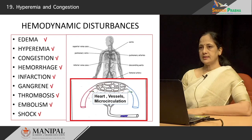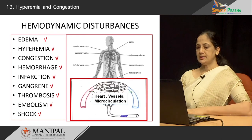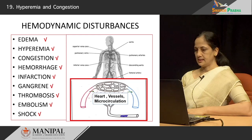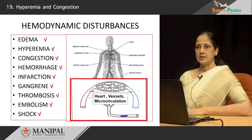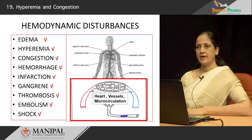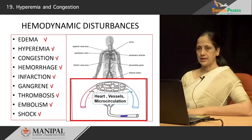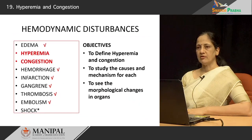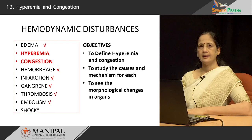Hello. In this class, we are going to continue looking at hemodynamic disturbances. This group of disorders involves a number of different problems that can occur because of aberrations in our blood circulation, either at the level of the heart, the blood vessels, or the microcirculation. In this class, we will focus on hyperemia and congestion.